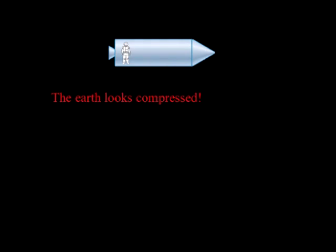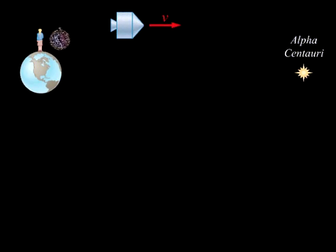The relation between the distances measured by two observers in relative motion at a constant velocity can be obtained by examining the trip to Alpha Centauri. From the point of view of the Earth-based observer, the time of the trip is Delta T, and the distance from Earth to Alpha Centauri is L0.